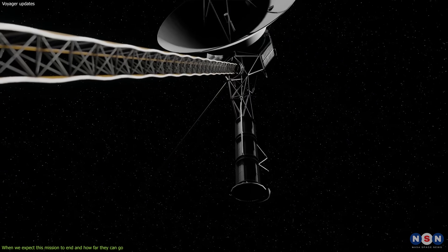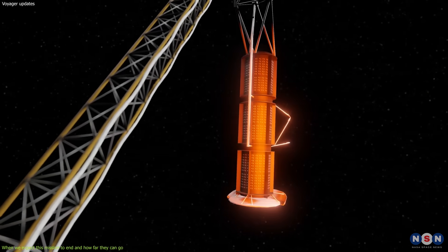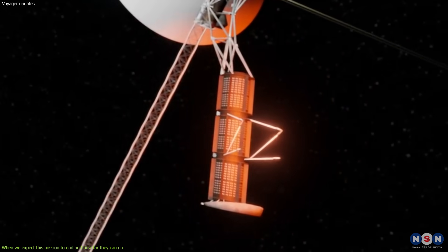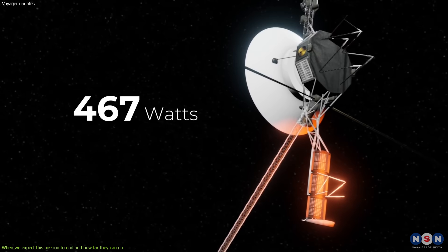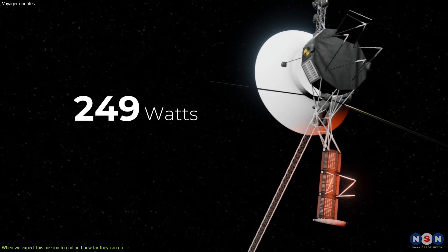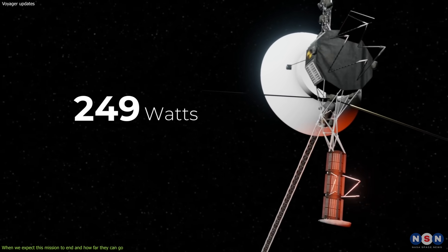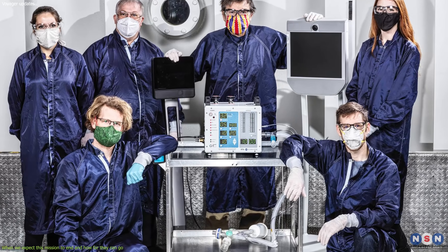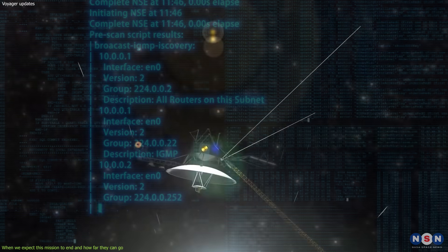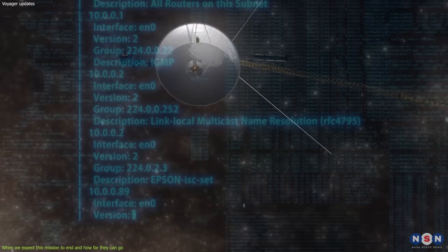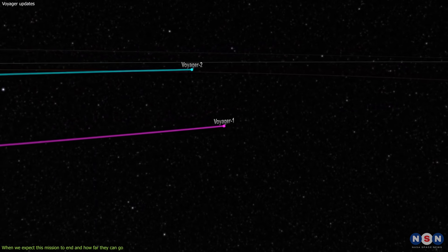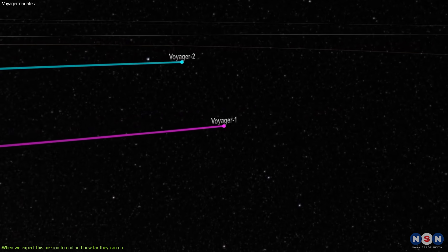The power supply comes from three radioisotope thermoelectric generators, or RTGs, that convert heat from radioactive decay into electricity. The power output decreases by about 4 watts per year. This means that eventually there will not be enough power to operate all the instruments on board. The engineers at JPL have been managing this problem by turning off some instruments or reducing their activity. They have also been optimizing the power usage by updating the software on the spacecraft. The current estimates are that both spacecrafts will have enough power to operate some of their instruments until around 2025.